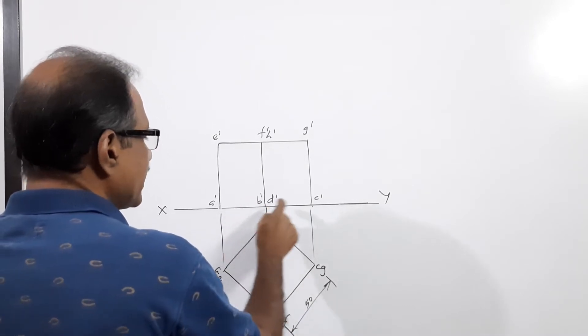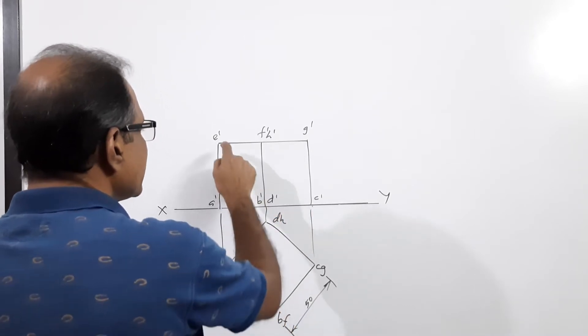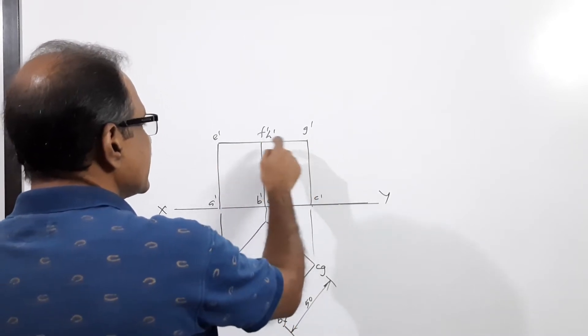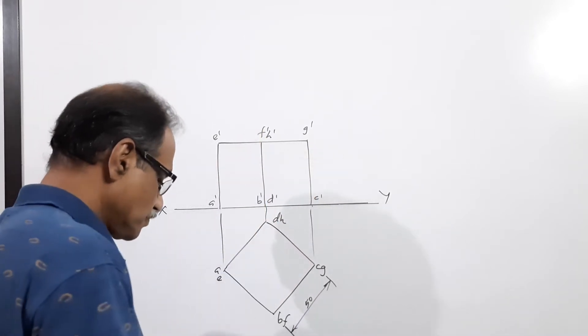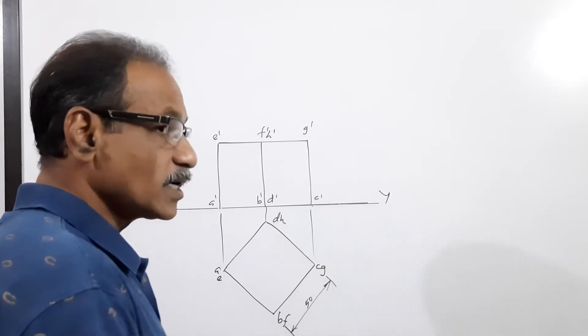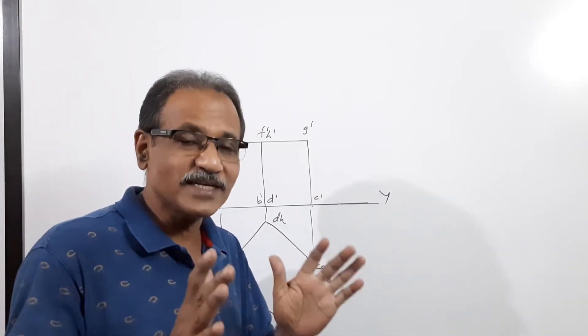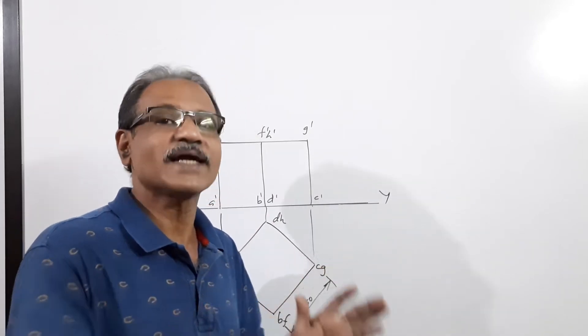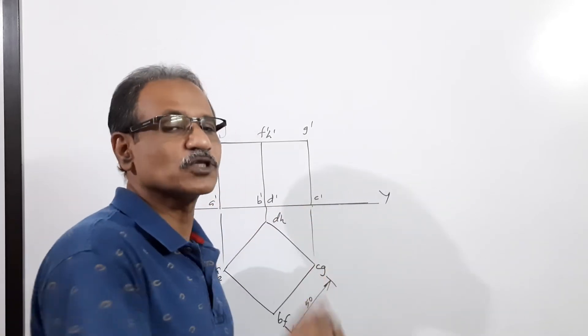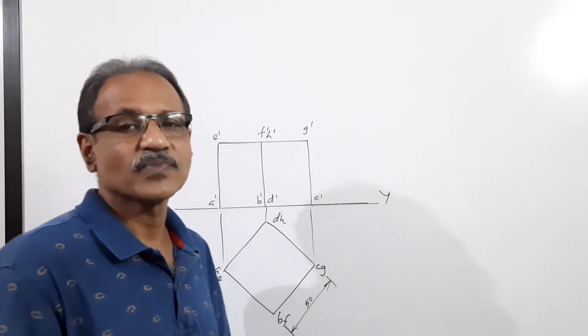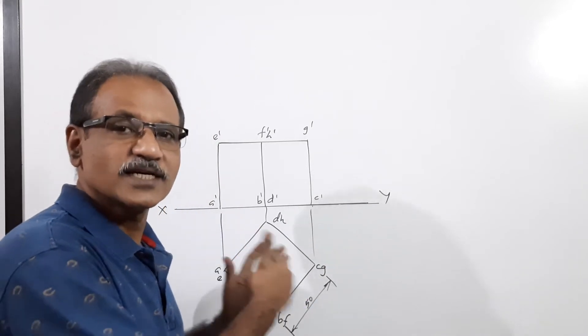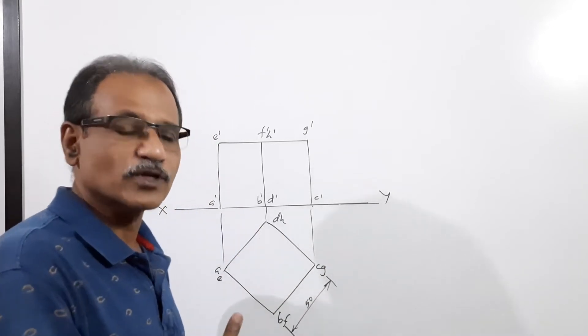Label the vertices A, B, C, D, E, F, G, H and their corresponding dashed points A', B', C', D', E', F', G', H'. The orientation or position of the cube is not mentioned in the question, but I choose this position for the cube.